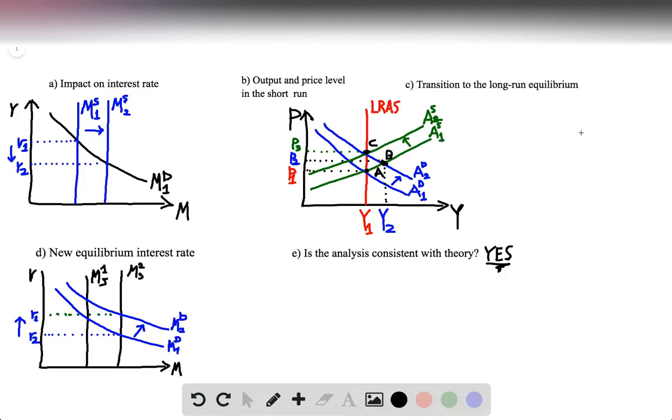Well, following from question one, we know that the theory of liquidity preference can be illustrated very vividly using the supply and demand graph in the money market. On the x-axis, we'll have the quantity of money, M.